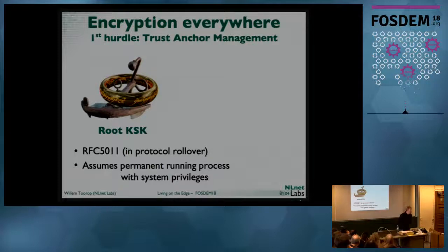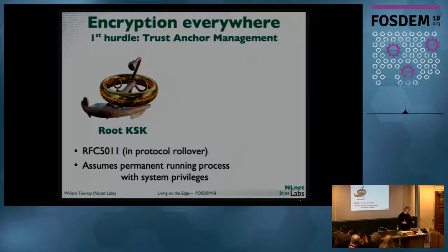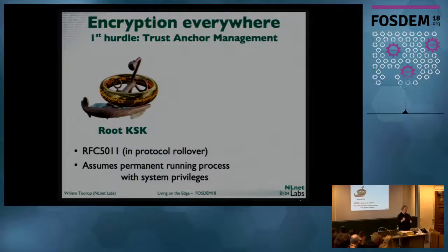There's the root key signing key, the root of the DNS, used to sign the top level domains. There is a problem — the first hurdle for a stub resolver — which is trust anchor management. There is a trust anchor management protocol written for recursive resolvers; it assumes a permanently running process with system privileges, waiting 30 days to confirm a new key. This doesn't match stub resolver properties. Stub resolvers might be applications, don't run all the time, and run with user privileges, so data written to disk is overwritable by other applications.